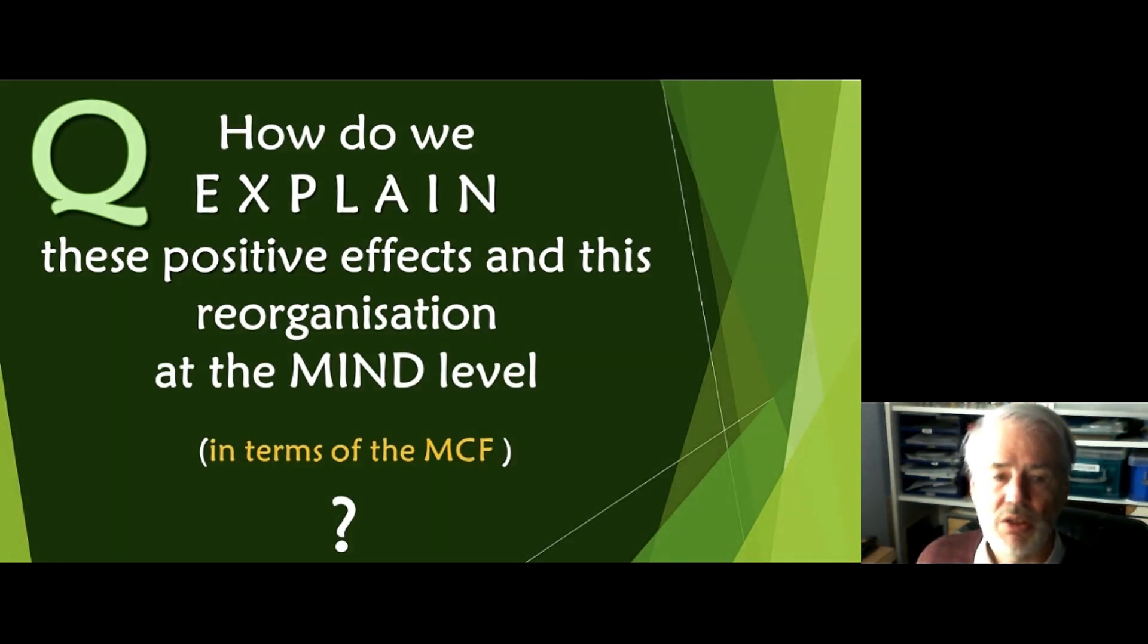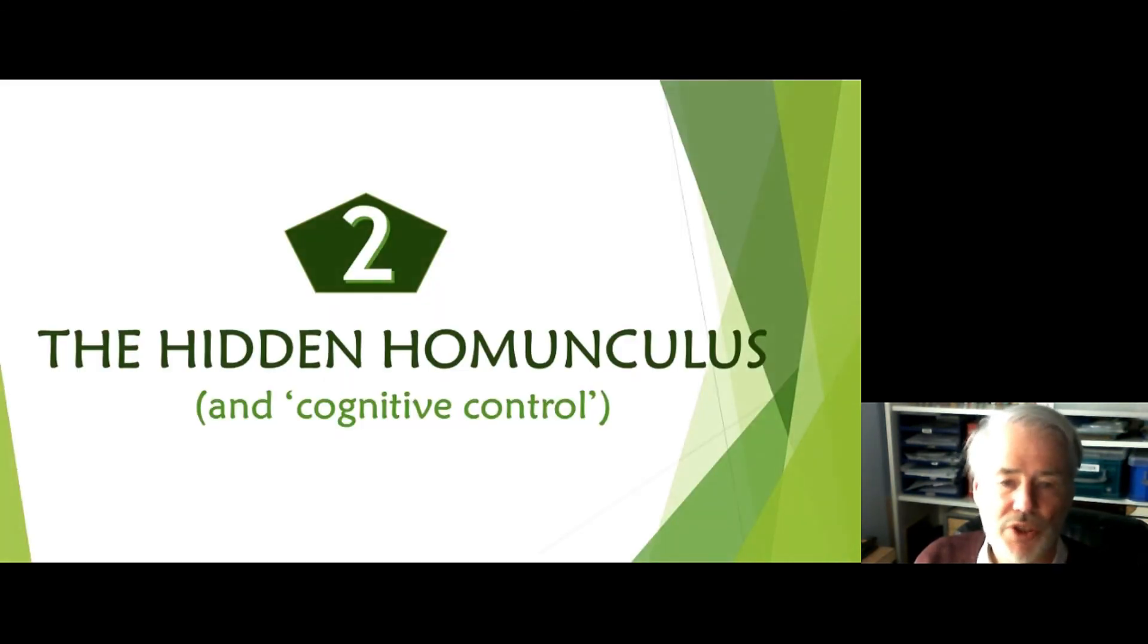Concentrating now on the positive effects that have been found for multilinguals, how are we going to explain this kind of reorganization at the mind level and do this in terms of the modular cognition framework? Because the modular cognition framework, if it is anything, it is a way of creating and enriching explanations of research data. So this will all be revealed or as much as I can give you at the time I'm given. But first I want to warn you and the warning comes in the second main section of this talk and the last one in this first part and it's to do with the notion of a homunculus and that's everything to do with cognitive control.